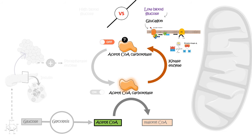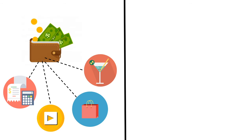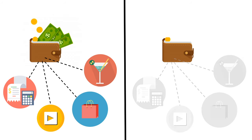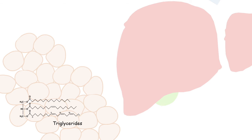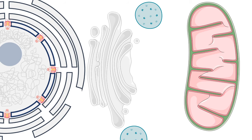Instead, acetyl-CoA would be utilized to generate other products such as ketone bodies. To use an analogy: if we have a lot of money in our wallet, we can spend it freely, but if we don't, we must rely on savings. Similarly, when the body is deprived of food input, it utilizes existing substrates for energy. One such substrate is triglyceride present in adipose tissue — under starvation, adipose tissue releases fatty acids, which are utilized in the liver.